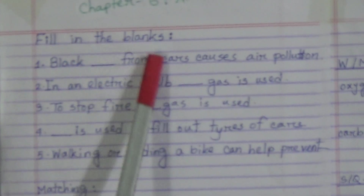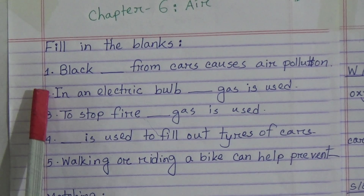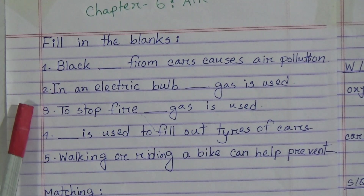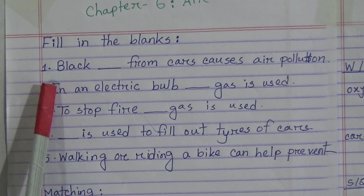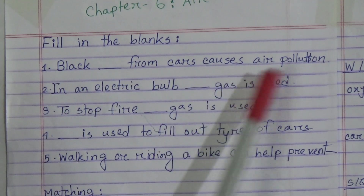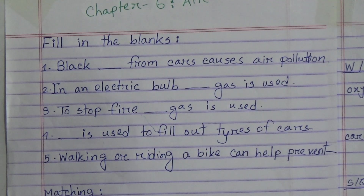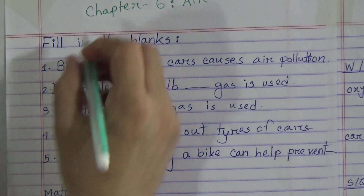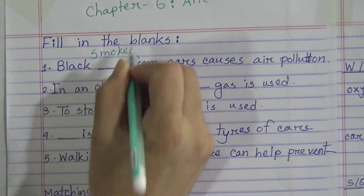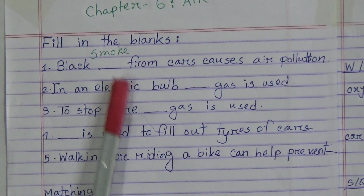My dear students, let's start our class. Chapter Six — the chapter name is 'Air.' Fill in the blanks. Take your textbook and follow this class with your textbook. Number one: fill in the blanks — black dash from cars causes air pollution. The answer is 'smoke.' Write S-M-O-K-E: smoke. Black smoke from cars causes air pollution.